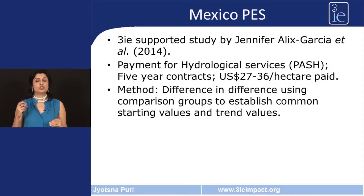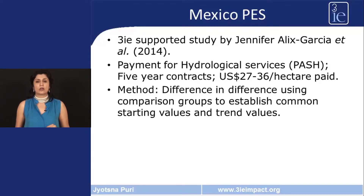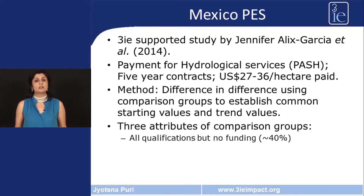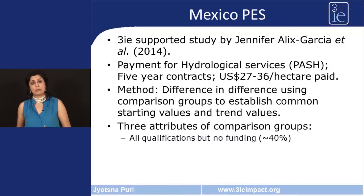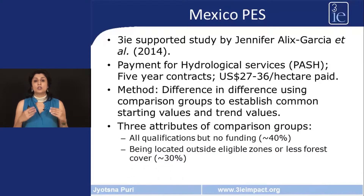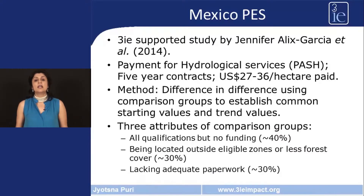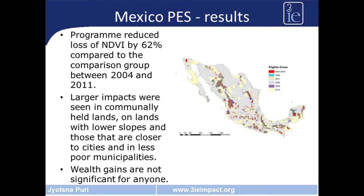The choice of comparison group is especially interesting. The comparison group was chosen from applicants to the program with mainly three characteristics: first, those who had all the qualifications but the program ran out of funding; second, those located outside of eligible zones or with less forest cover; and third, those that just lacked adequate paperwork but would have otherwise made it into the program.